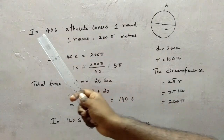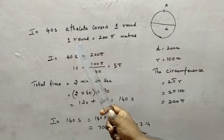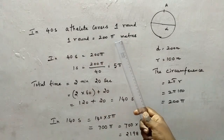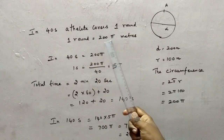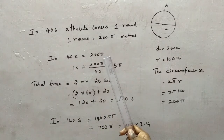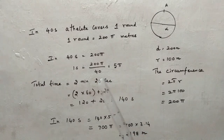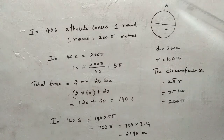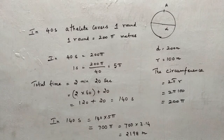From the question, in 40 seconds the athlete covers one round, and the distance covered in one round equals 200π meters. So in 40 seconds, distance = 200π. Therefore in one second, distance = 200π ÷ 40 = 5π meters. The athlete starts from A and returns to A each round.